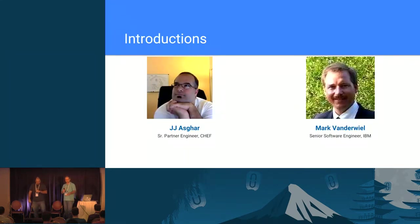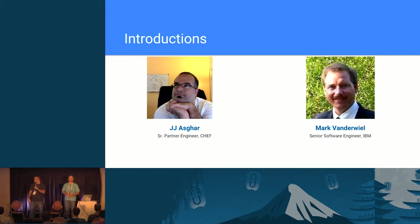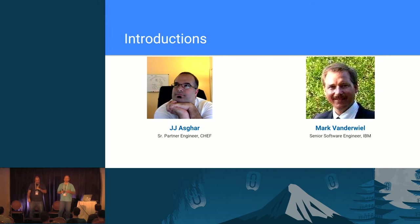We'll start off with some introductions. My name is JJ. I'm a senior partner engineer at Chef — I am the OpenStack Chef guy. Anything Chef-related and OpenStack-related usually gets funneled through me at some point. I'm a technical resource. My name is Mark Vandeweel, I'm from IBM. We started using Chef a few years ago when we got involved with the OpenStack project — they seemed like a good pair. I've been working on the project for quite a while now and I'm one of the cores.